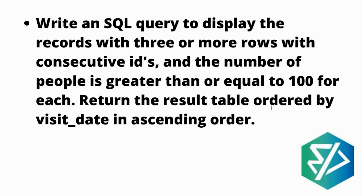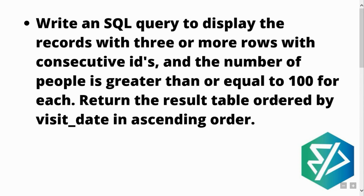This is the question you can see on the screen. The question says: write an SQL query to display the records with three or more than three rows with consecutive IDs and the number of people is greater than or equal to 100 for each. Return the result table ordered by visit date in ascending order.